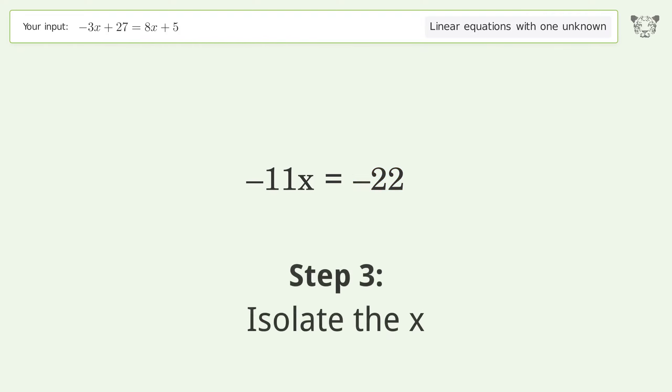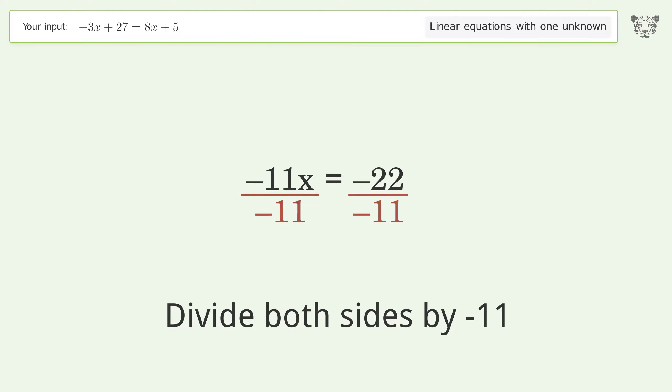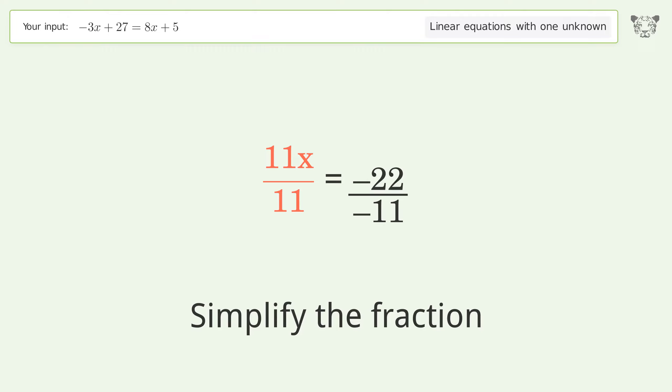Isolate the x. Divide both sides by negative 11. Cancel out the negatives. Simplify the fraction. Cancel out the negatives.